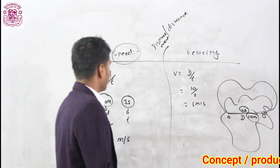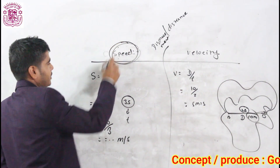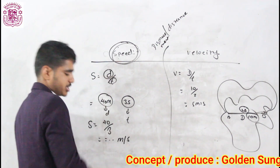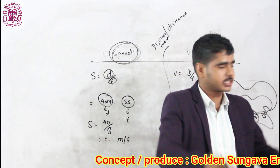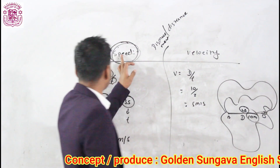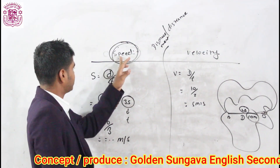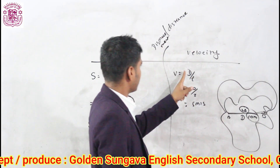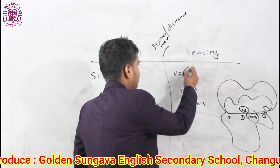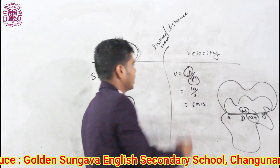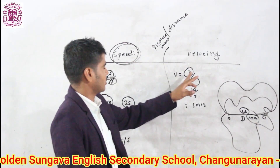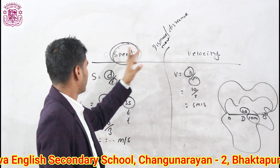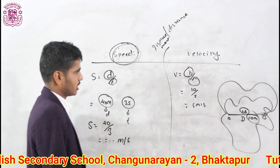Speed is a scalar quantity because distance is a scalar quantity and time is also a scalar quantity — for example, 4 seconds has no direction. So speed is a scalar quantity. Whereas velocity is a vector quantity, because if we divide a vector quantity by a scalar quantity, we again get a vector. So velocity is a vector quantity, whereas speed is a scalar quantity.